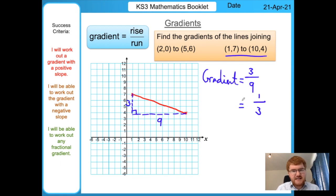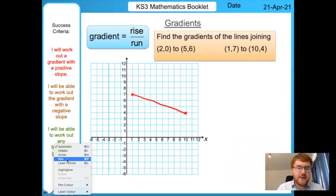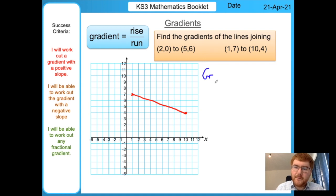Divided by the run, which is 9, and if we simplify our fraction we get 1 over 3. The last thing we notice is that the line is downward sloping, so we need to put a minus in front of our gradient to indicate it's going downwards. Now we're going to use the formula method.